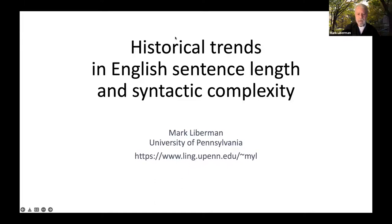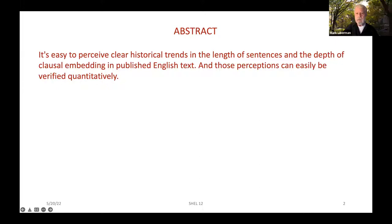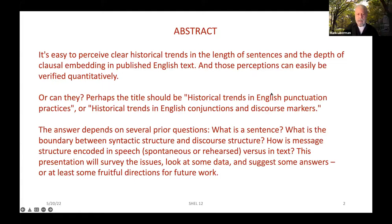It's easy to perceive clear historical trends in the length of sentences and the depth of clausal embedding in published English text, and those perceptions can easily be varied quantitatively. Or can they? Perhaps my title should be 'Historical Trends in English Punctuation Practices' or 'Historical Trends in English Conjunctions and Discourse Markers.' The answer depends on several prior questions: What is a sentence? What's the boundary between syntactic and discourse structure? How is message structure encoded in speech versus text? This presentation will survey the issues, look at some data, and suggest some fruitful directions for future work.